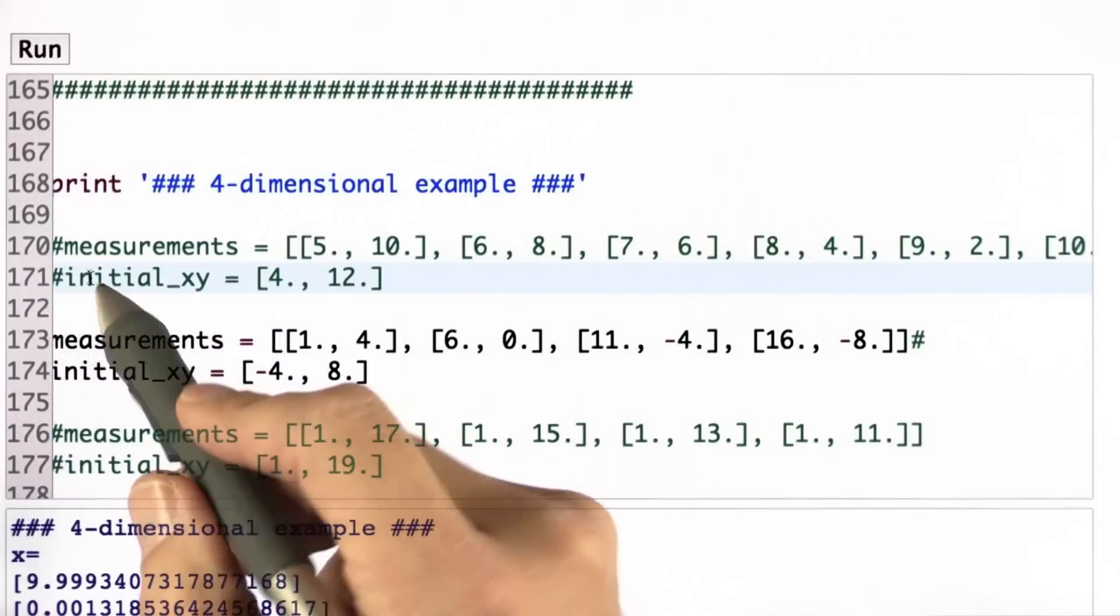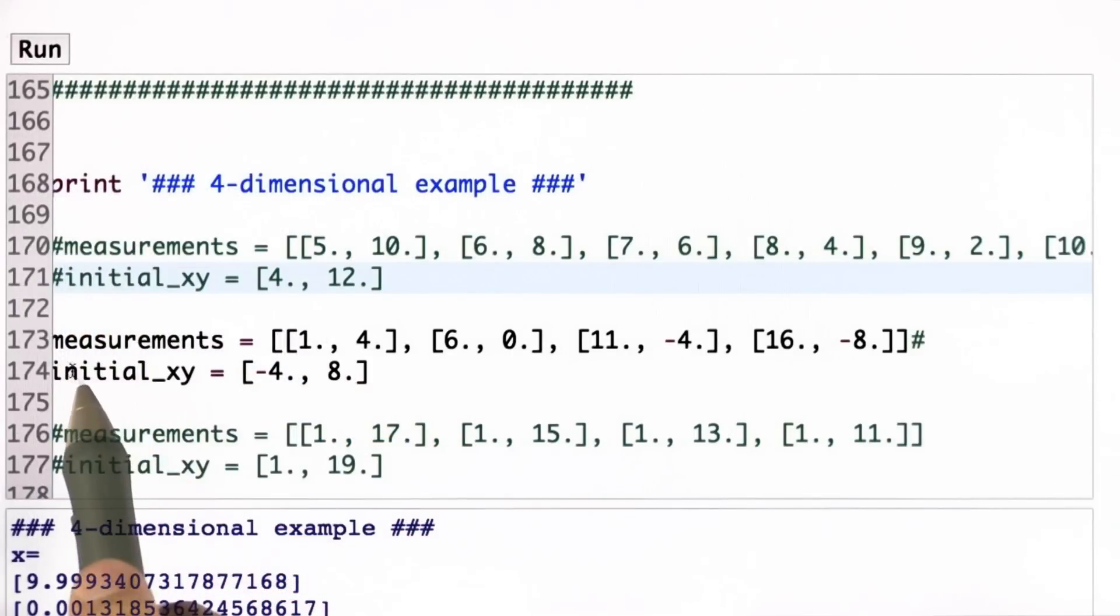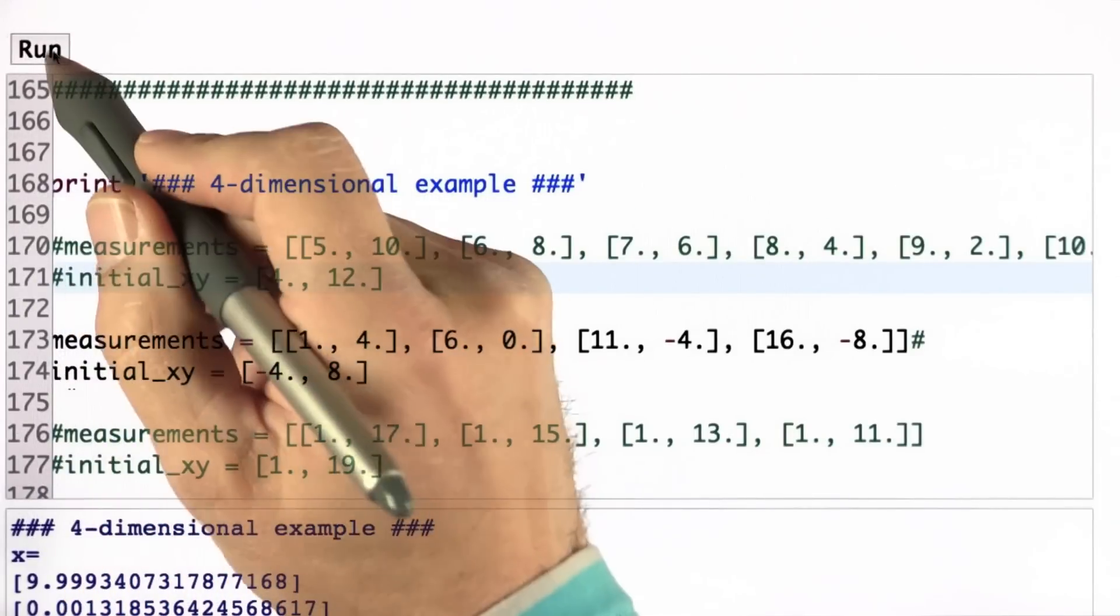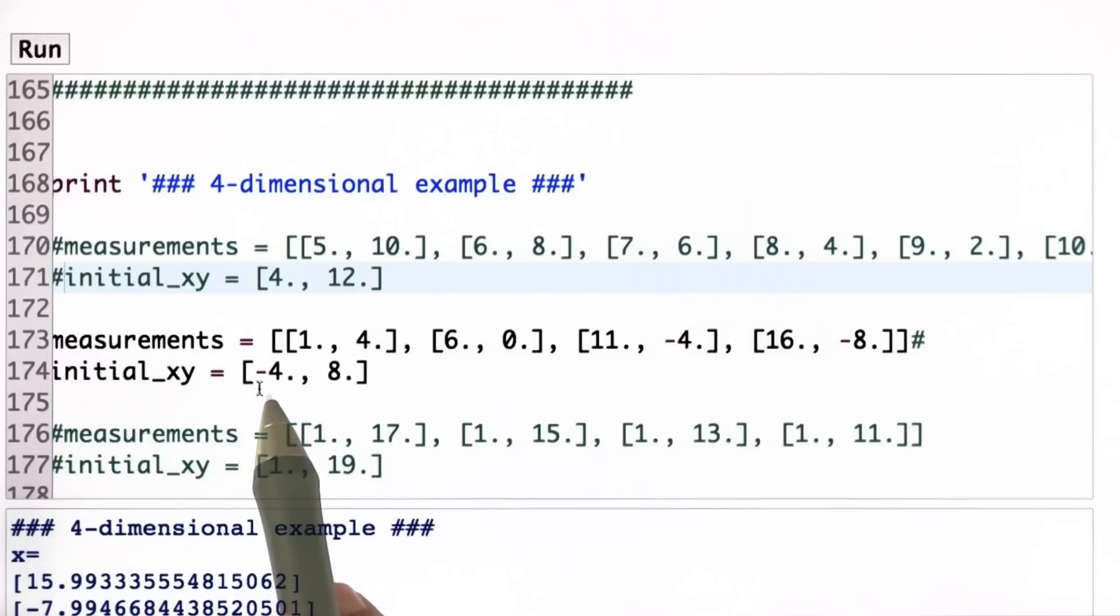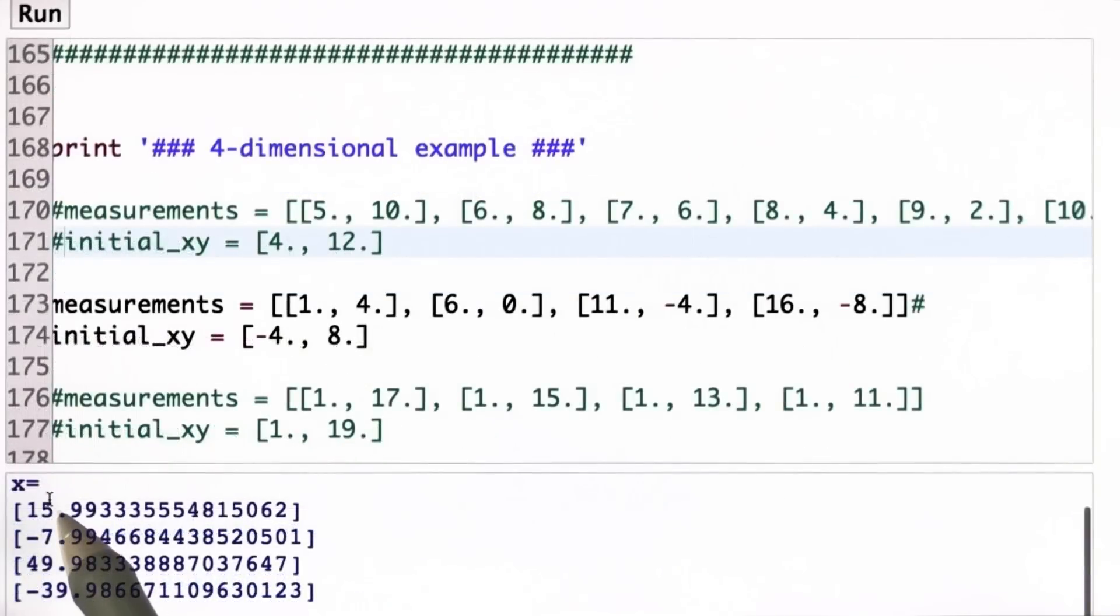Going to the second example, I now commented away the first example and put in place the second example. If I run it again, here we see the first dimension go from minus 4, 1, 6, 11, 16. Second dimension 8, 4, 0, minus 4, minus 8. And these are the exact same values over here, 16 and minus 8. For velocities, I get 50 and minus 40, which are exactly the correct velocities.